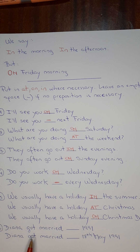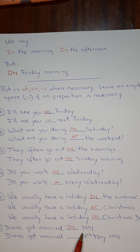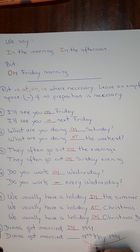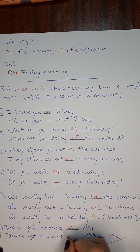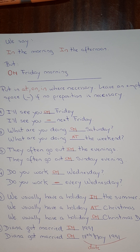Six: Diana got married — we have a year — in 1991. But Diana got married and we have a date. This is a date, so it's on the 18th of May 1991.